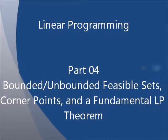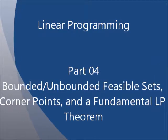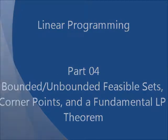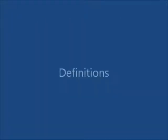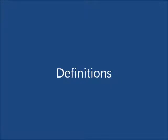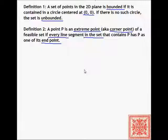We'll continue with linear programming. In part four, we'll talk about bounded and unbounded feasible sets, corner points, and the fundamental theorem of linear programming. We'll start with the definitions. Definition one: a set of points in the 2D plane is bounded if it is contained in a circle centered at zero, zero.